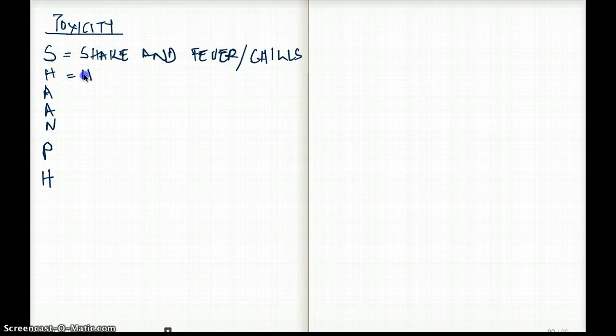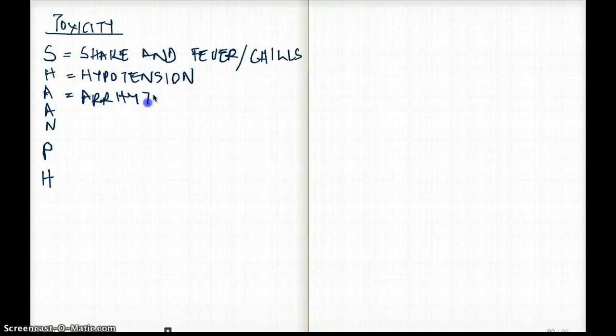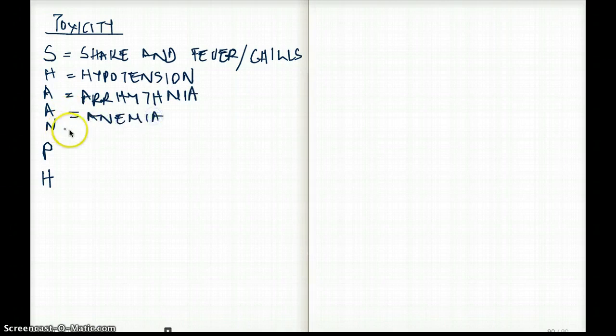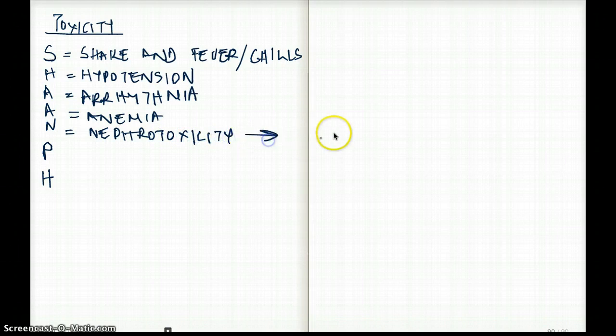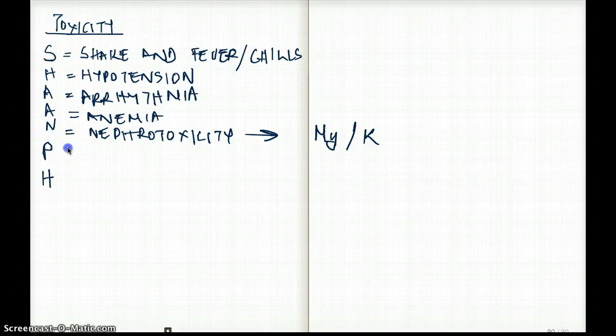A is going to be for arrhythmia. The next A is going to be for anemia. N is going to be for, this is the obvious one, nephrotoxicity. Now, since it causes nephrotoxicity, we do have to supplement with magnesium and potassium. Because, there is an electrolyte imbalance with Amphotericin B. And, P is going to be for phlebitis. IV phlebitis.